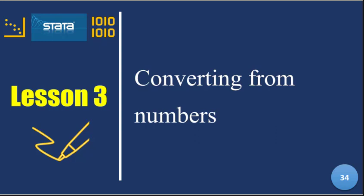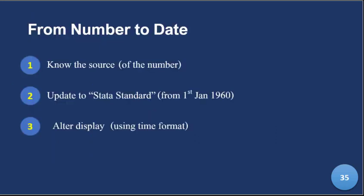First, you need to understand the source — the source is key. This is important because different softwares have different reference points. For Stata, you are referencing from January 1st, 1960, but for Excel, it is January 1st, 1900. So there is a 60-year gap between Excel and Stata, and they give you different results.